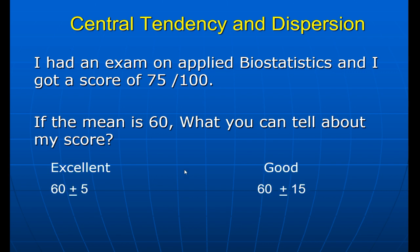This is the concept. If the mean is 60 and the standard deviation is 5, I am at the third standard deviation: 60 plus 5 is 65, plus 5 is 70, plus 5 is 75 — I'm excellent. However, if the standard deviation is 15, then 60 plus 15 is 75, meaning I am at only the first standard deviation. Different standard deviations give different answers about the importance of the mean.